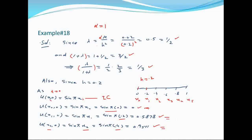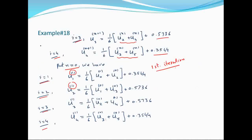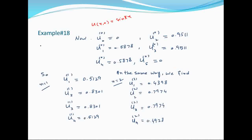यह values हैं: u₀₀, u₁₀, u₂₀, u₃₀, u₄₀, u₅₀ — यही values हमने यहाँ लिखी थीं। ये initial condition से ली गई हैं।